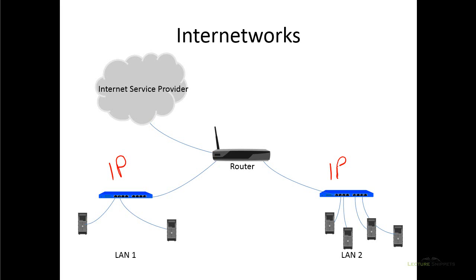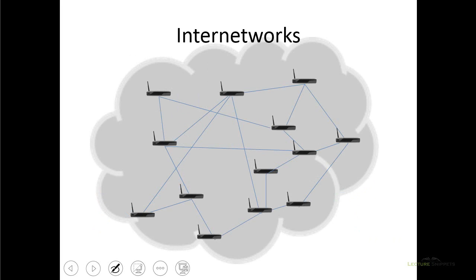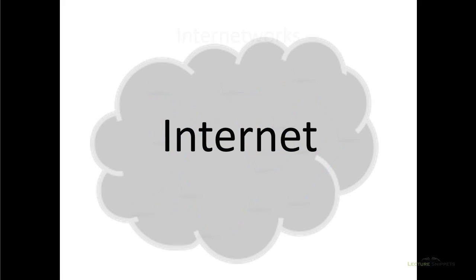Those different networks communicate through the router. Routers are really a fundamental part of networking — they allow all the networks for every different business or home to communicate together. Basically, we have routers representing all different businesses and homes, and we can have different networks all joined together into one huge network. That big network joined together from all the different routers and all the different networks connected together is called the internet. That is really what makes up the internet, and that's the fundamental knowledge of inter-networks.